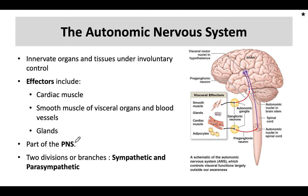The autonomic nervous system can be further divided into the sympathetic and parasympathetic systems. Most autonomic nervous processes are controlled primarily through brainstem or spinal cord reflexes with input from higher centers in the brain.